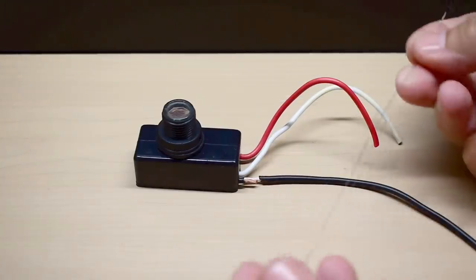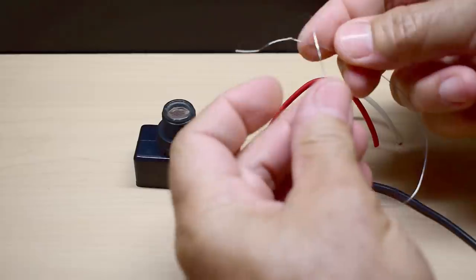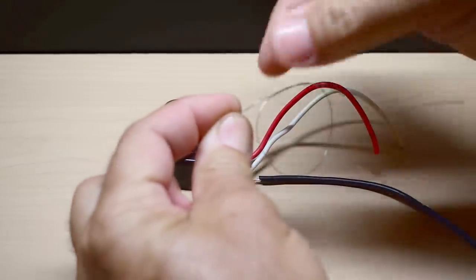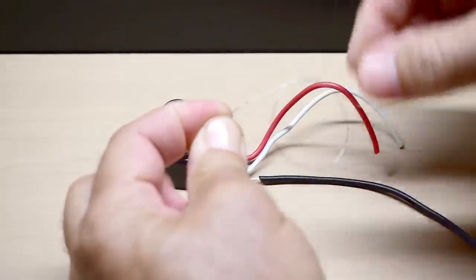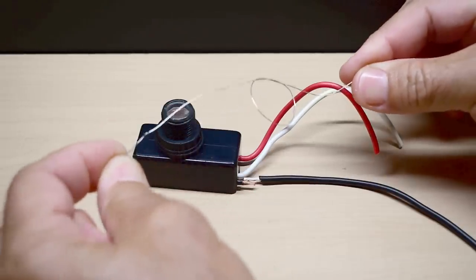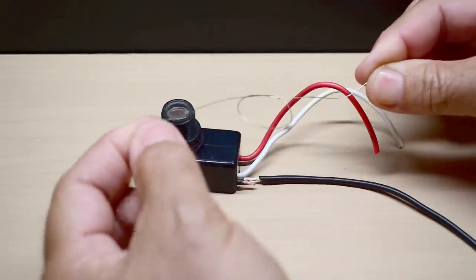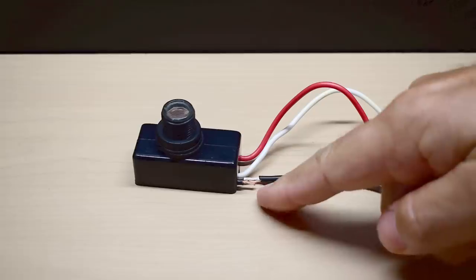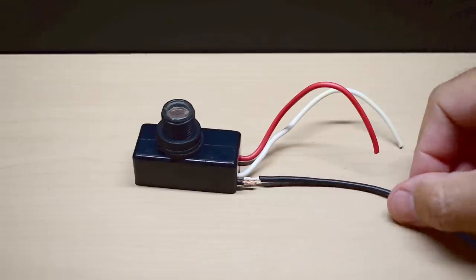Now the first thing I normally do is I make a loop, just a simple loop right here. Keep it towards the middle, and you're going to place both of these wires tight up against each other side by side.